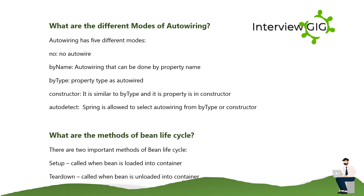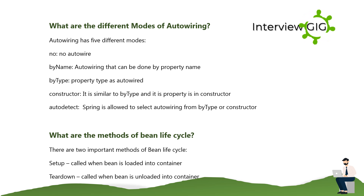The five auto-wiring modes are: No — no auto-wiring; By Name — auto-wiring done by property name; By Type — property type is auto-wired; Constructor — similar to By Type but the property is in the constructor; and Auto Detect — Spring is allowed to select auto-wiring from either By Type or Constructor.